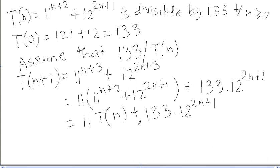Now since we have already assumed that T(n) is divisible by 133 and the second term in the expression is also divisible by 133, we have ended up proving that T(n+1) is divisible by 133.